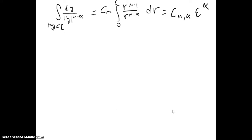Let's make a quick sketch of how to carry on with the second part. We have this integral dy over the absolute value of y to the n minus alpha, and with a change of variable r, we can obtain a constant times an integral that goes from 0 to epsilon, and this will equal a constant depending on n and alpha multiplied by epsilon to the alpha.